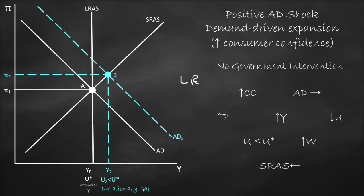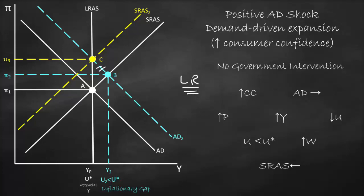We look at the point of intersection between aggregate demand 2 and the long-run aggregate supply curve — that will be point C. The short-run aggregate supply curve shifts left to intersect at point C. At this point, we reach our full employment output, our potential output at the natural rate of unemployment, but with a higher inflation level. Note that this happens in the long run, so the short-run aggregate supply curve shifts gradually over the years — represented by a few dashes — until we reach long-run equilibrium.